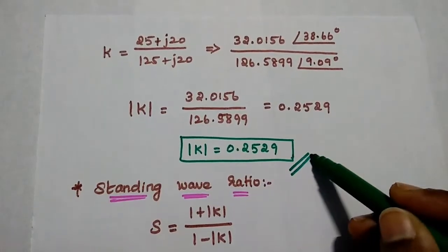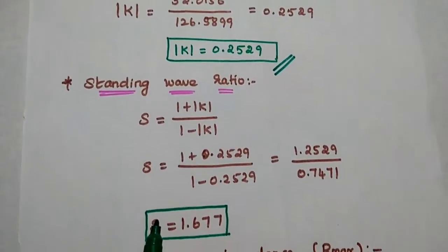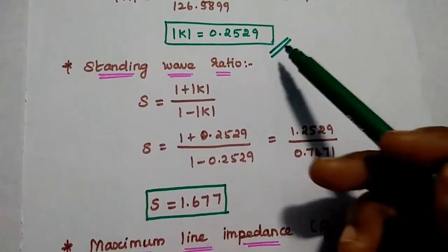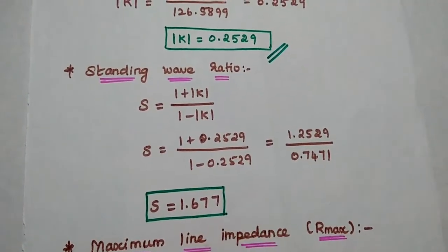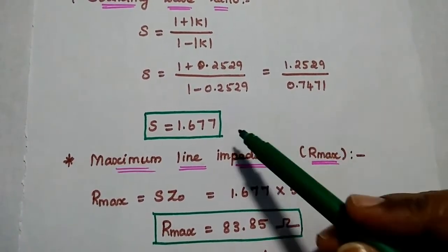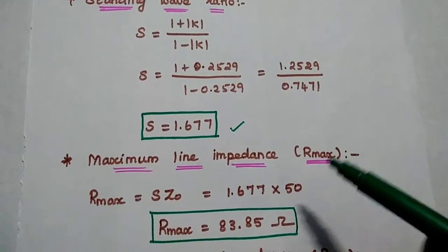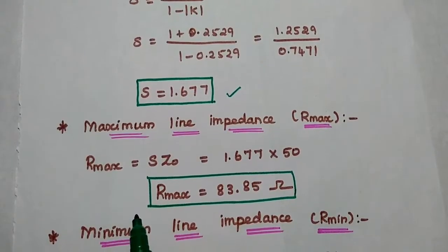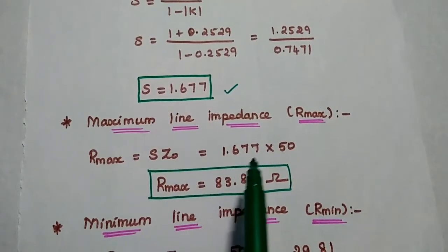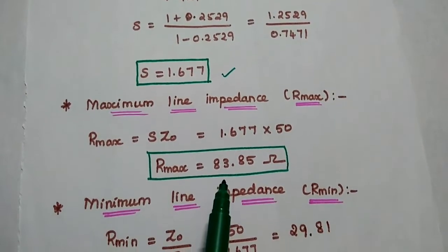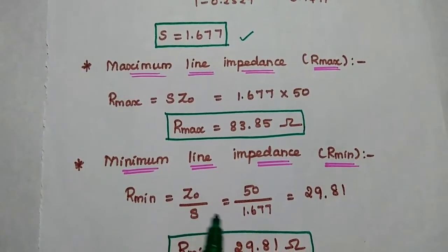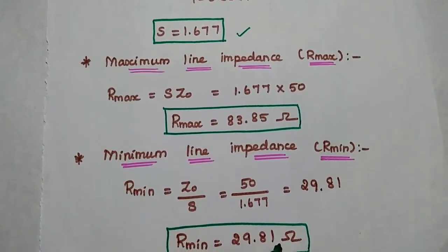The reflection coefficient K is 0.2529. Substituting into the standing wave ratio formula S equals 1 plus K divided by 1 minus K, we get the answer as S equals 1.677. For the maximum line impedance, Rmax equals S into Z0 equals 1.677 into 50, giving 83.85 ohm. For the minimum line impedance, Rmin equals Z0 by S equals 50 divided by 1.677, giving 29.81 ohm.